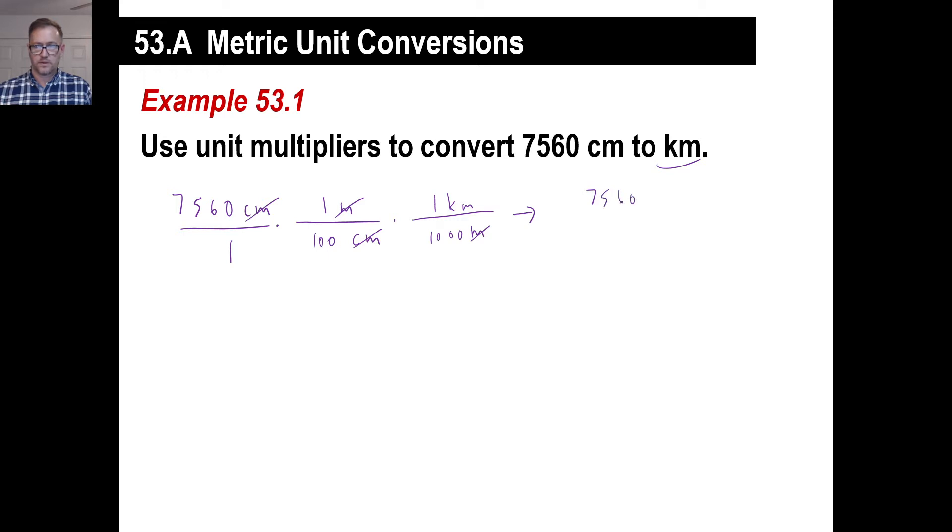So we've got to put meters on the bottom so that cancels out. So how many meters in a kilometer? A thousand meters in a kilometer. So meters go away, and we can just multiply across. 7560 at the bottom, you can put a hundred thousand if you want to. I think some of your answers in your book are like this. They might actually go ahead and do the division, so you'll have a decimal, but this is good enough for right now.